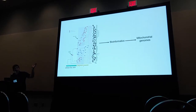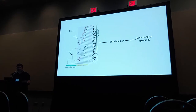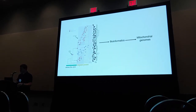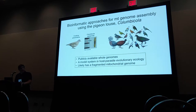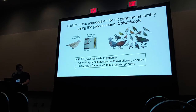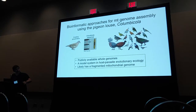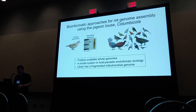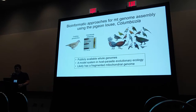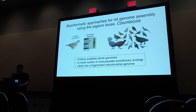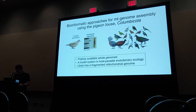To do this, we wanted to look across a broad diversity of parasitic lice. There's a lot of existing Illumina sequence data for a number of different louse groups from previous work, and we used bioinformatic approaches to assemble mitochondrial genomes. We developed our approaches using the pigeon louse genus Columbicola — a widespread genus found on pigeons and doves throughout the world — specifically Columbicola passerini. It's a model system in host-parasite evolutionary ecology, and previous attempts to assemble its mitochondrial genome haven't gone well, with indications it might be fragmented, making it a good place to start.